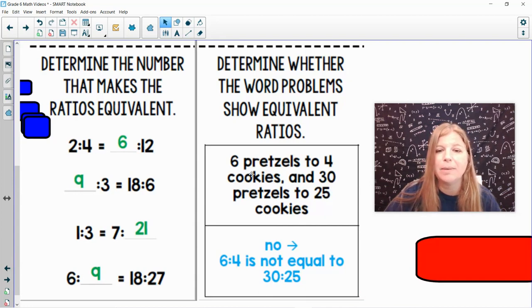So 6 to 4 is not equal to 30 to 25. Or I could set it up as 6 to 30 is not equal to 4 to 25. You can really pair them up however you want. Here I was pairing pretzels to cookies equals pretzels to cookies. But you can also match them up with their like term.